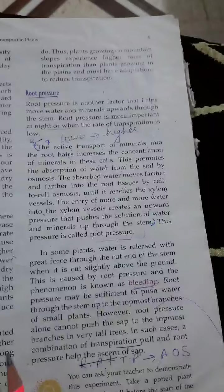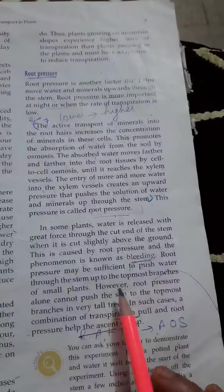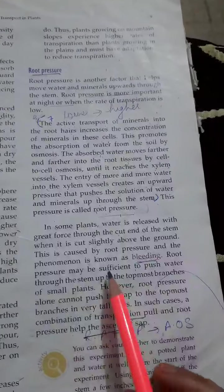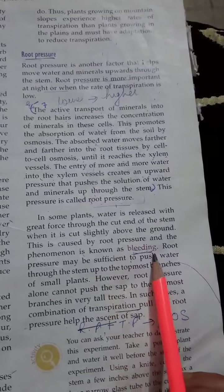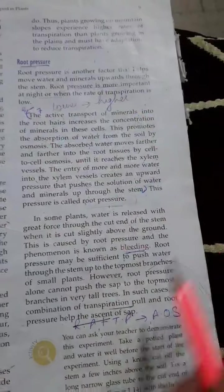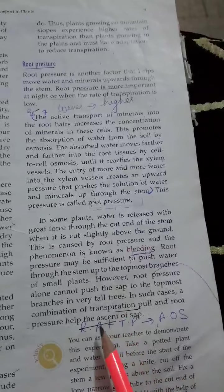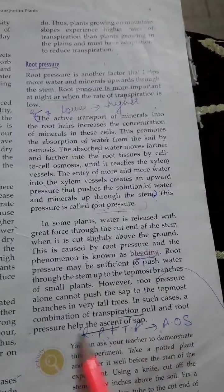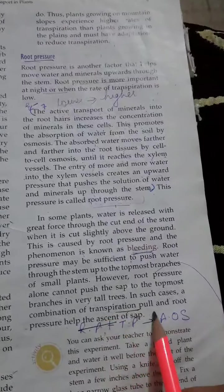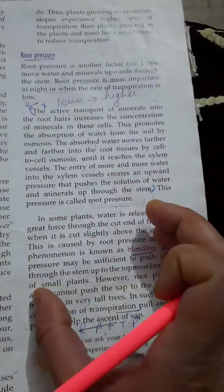Root pressure is sufficient to push water through the stem to the top of the plant but only in small plants. When we talk about tall plants we need both transpiration pull and root pressure so that the ascent of sap can happen. Otherwise root pressure alone is enough for small plants.